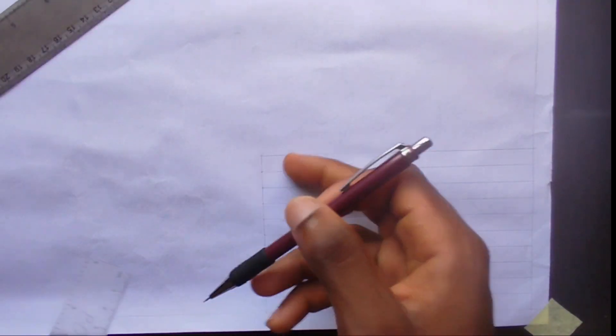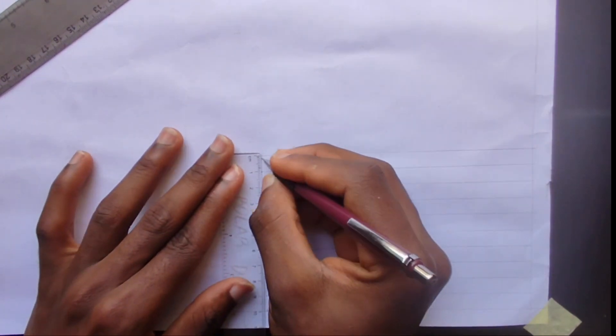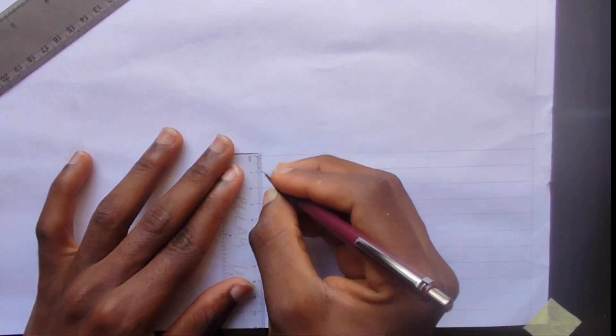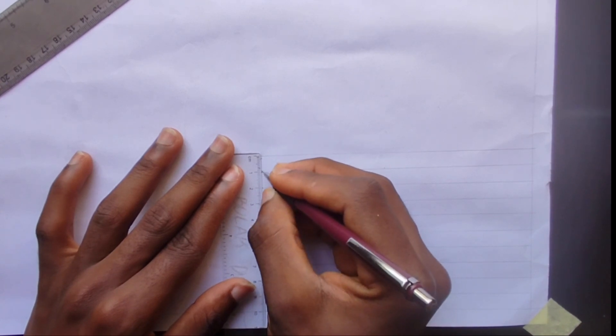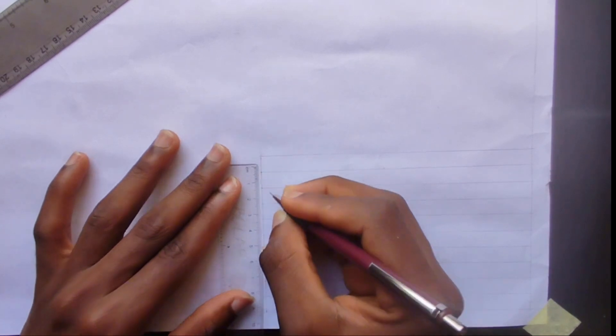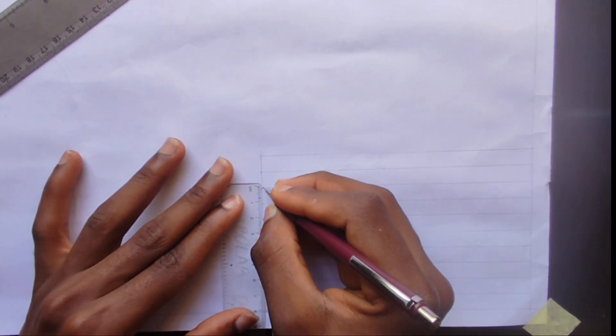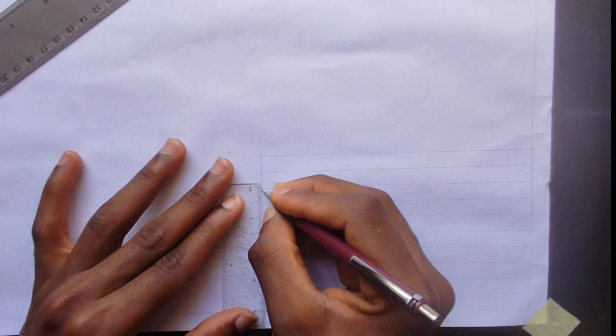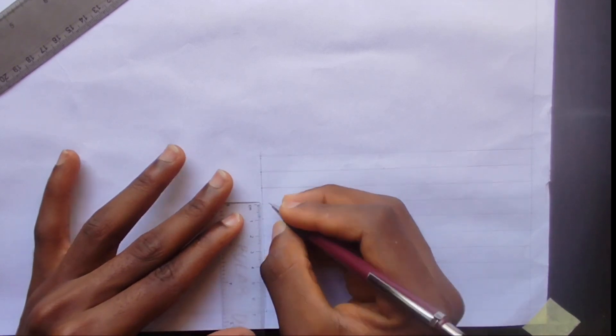I am dividing it into 10mm increments, we are going to be using 1.5mm on both sides. So pick here and here 1.5, pick here and here 1.5.